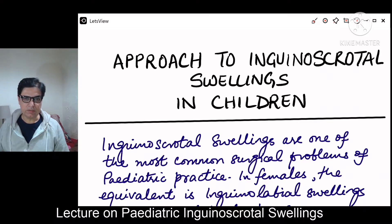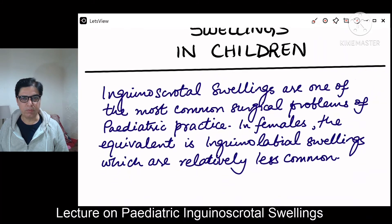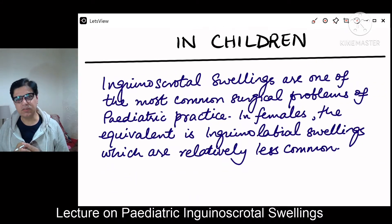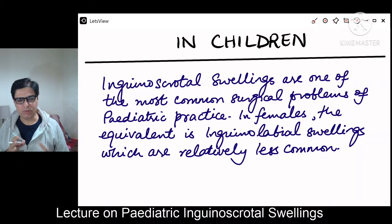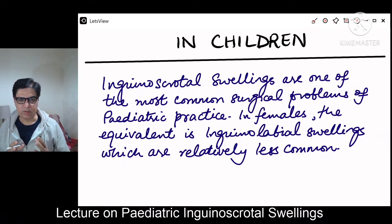Inguino-scrotal swellings, which is a problem of male children, is one of the most common surgical problems in pediatric clinical practice. Every now and then you will come across scenarios where you would be asked to see a child who has got a lump in his groin. Statistics say that around 10 to 20 per 1000 live births children might present with inguino-scrotal swellings. In females, we also have an equal surgical counterpart known as inguino-labial swellings, which are relatively less common.